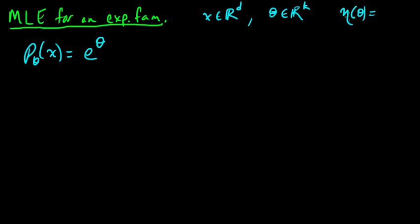So this is e to the theta transpose times s of x, where s is a vector-valued function, times h of x for some non-negative function h, divided by z of theta. So that's what we're working with here; this parameterizes our exponential family.